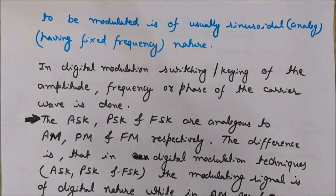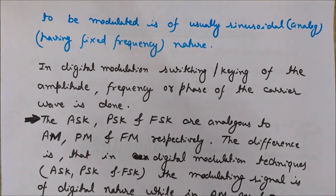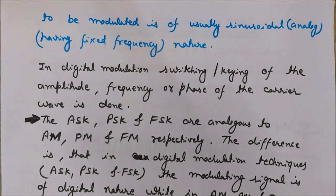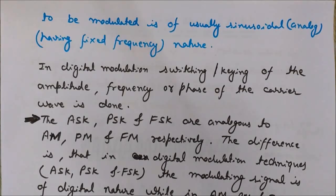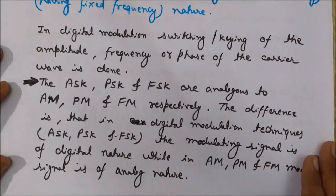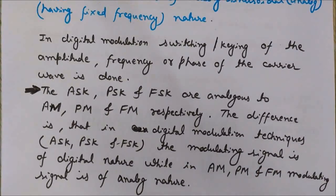ASK, PSK, and FSK are analogous to AM, PM, and FM respectively. The key difference is that in digital modulation techniques the modulating signal is digital in nature, while in analog modulation techniques like AM, FM, and PM the modulating signal is of analog nature.